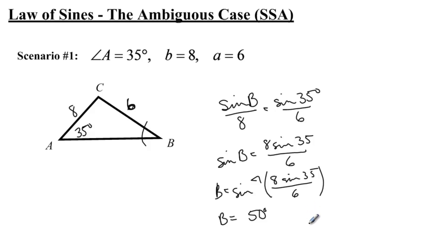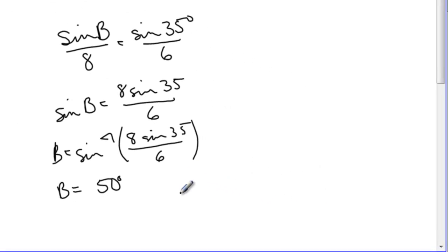Now, this is where we need to check to see what happens or what other possibilities exist. And knowing that the sine function gives us the same angles in the first quadrant and the second quadrant, I also have to check the supplement to 50 degrees, which is 130 degrees. Because if I say the sine of 50 on my calculator and the sine of 130, I will get the same answer. And so this has a possibility of having two triangles, 1 and 2.